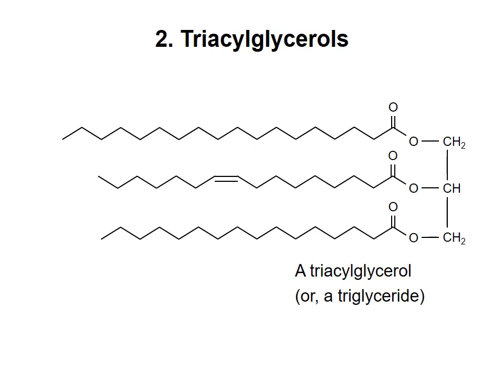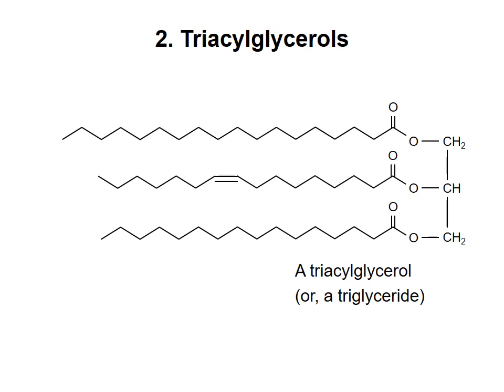Triacylglycerols are used to store fatty acids as energy reserves in adipocytes, or fat cells. If one of the acyl groups of a triacylglycerol is replaced by a phosphate group, the result is a glycerophospholipid. The phosphate group itself can be modified with different polar or hydrophilic groups, such as choline or serine.